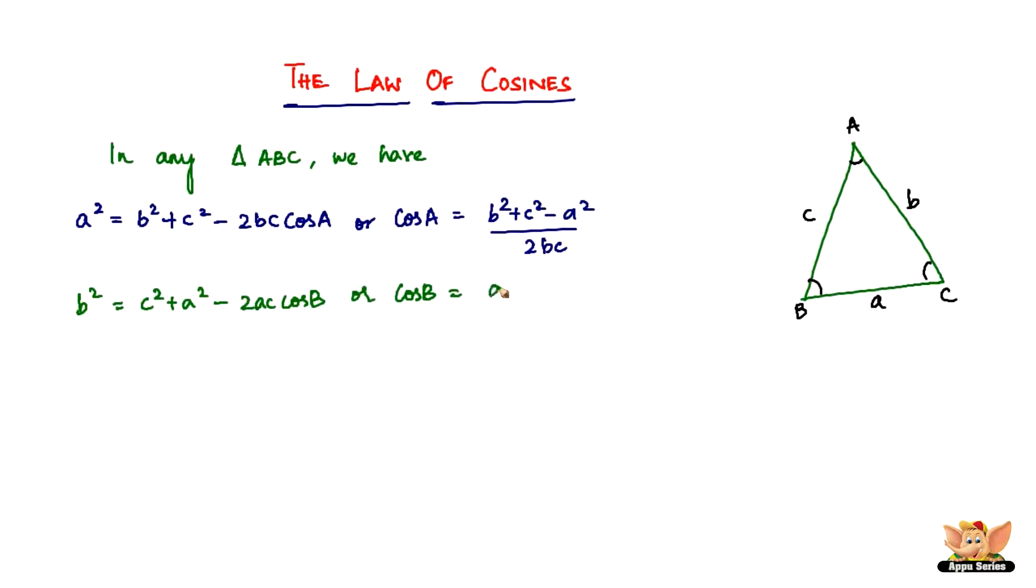be written as a² + c² - b² divided by 2ac. And then finally we've got c², which is equal to a² + b² - 2ab cos C. Or cos C equals a²